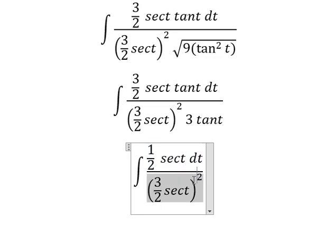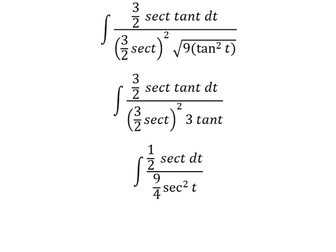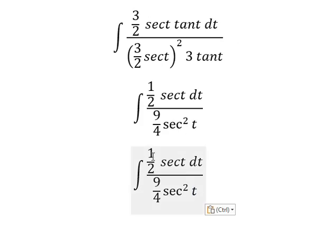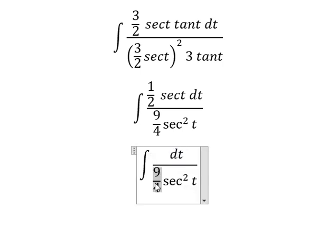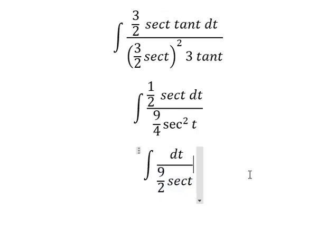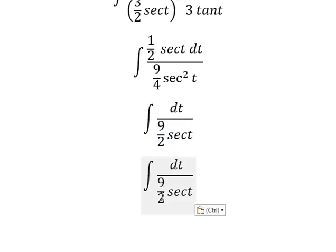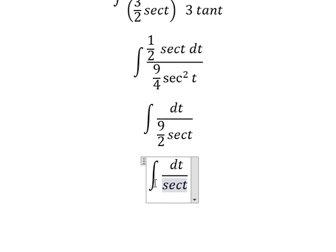Next this one we have 9 over 4 secant of t square and later we simplify 1 over 2 secant of t on numerator and denominator. So 9 over 2 in here I will put into 2 over 9 in here.